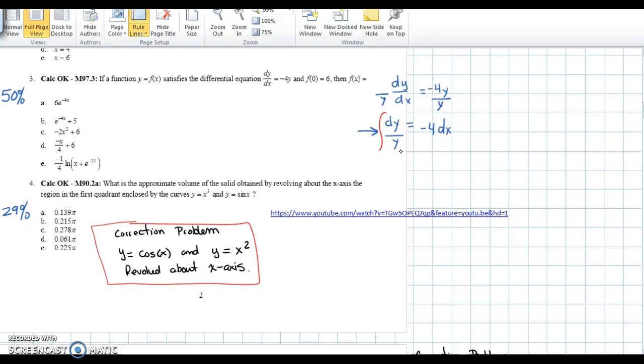We have y to the 1 in the denominator, so we have LN of absolute value of y equals negative 4x plus C.